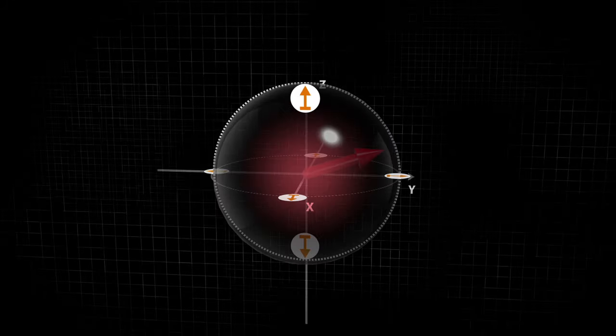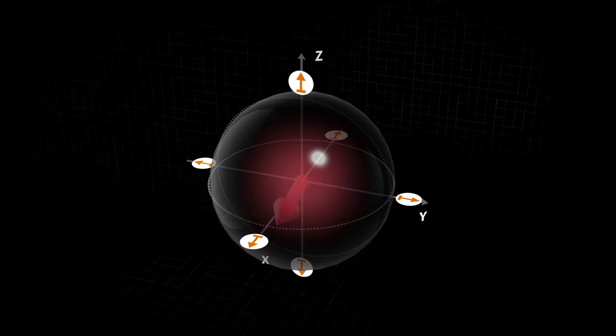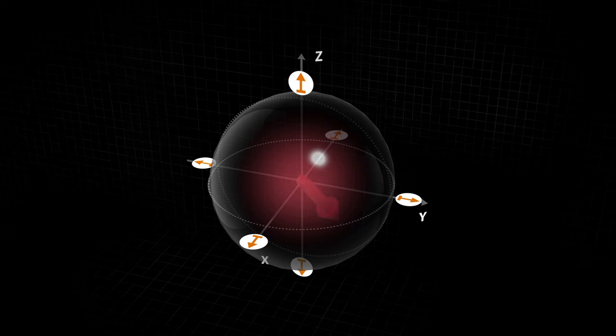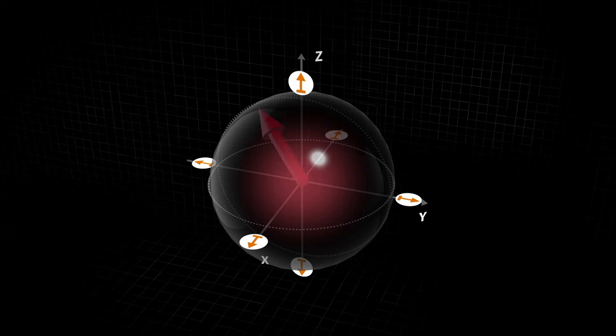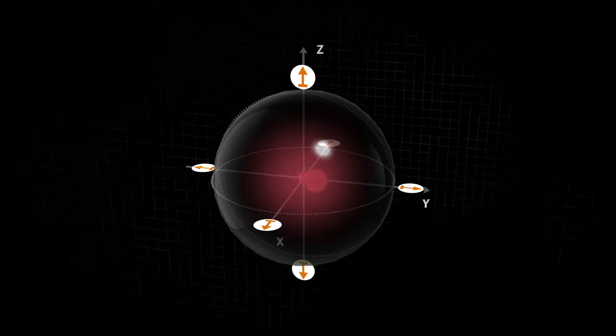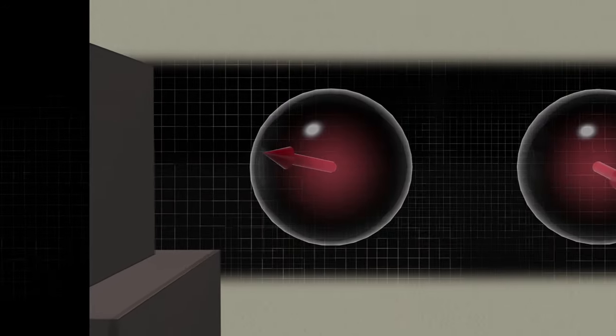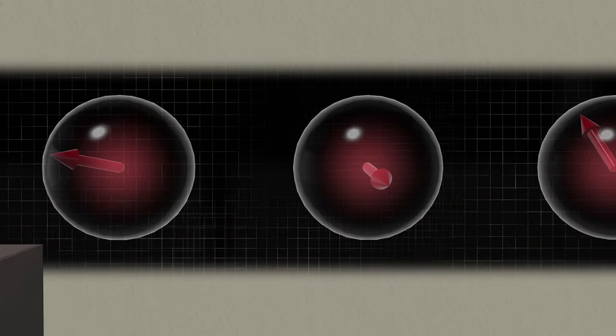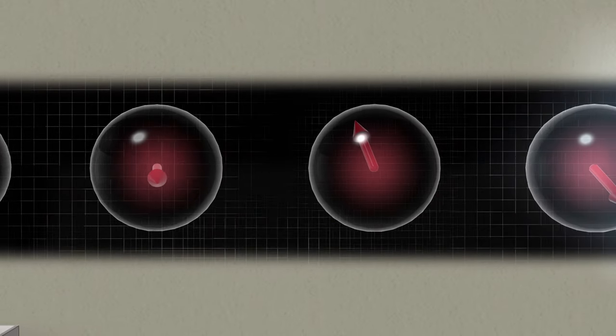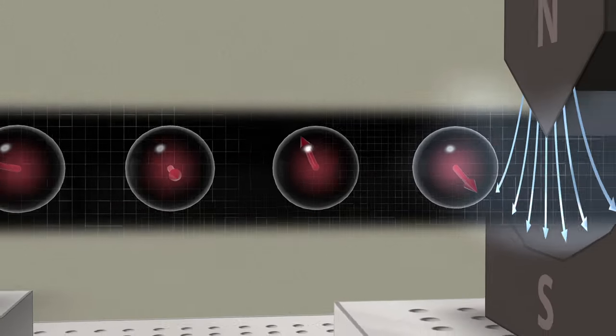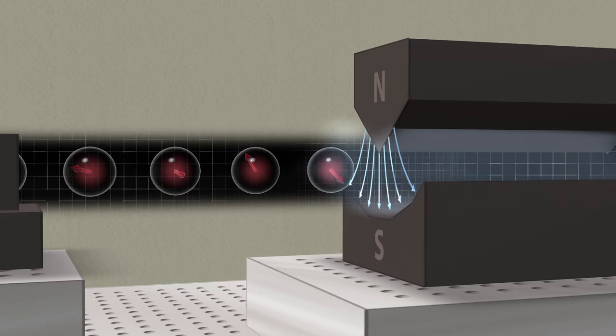We can represent this spin state using a Bloch sphere. The spin can point in any random direction. The spins of all silver atoms are randomly distributed. They are, therefore, not polarized.